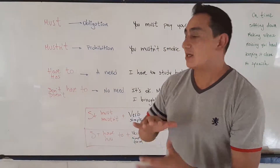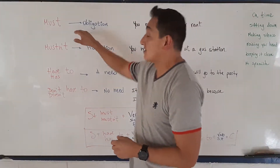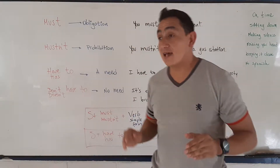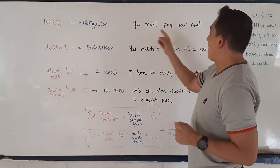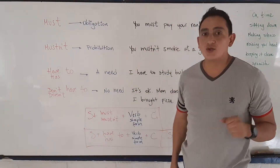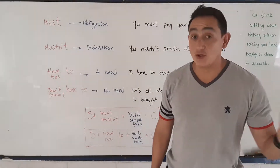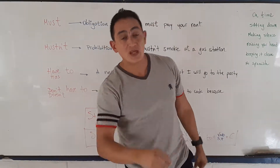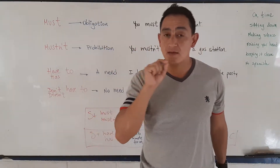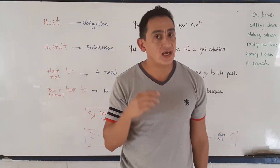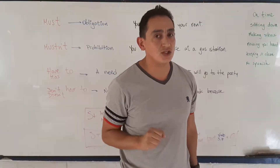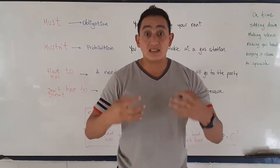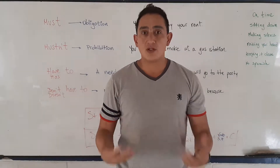So let's begin with must. Must is to express obligation. Like in the example: you must pay your rent. If you don't pay your rent, bye-bye. So you must pay your rent — that is your obligation. You must study, you must eat if you want to live.